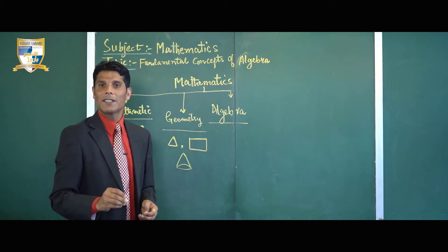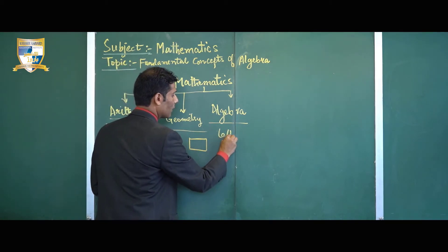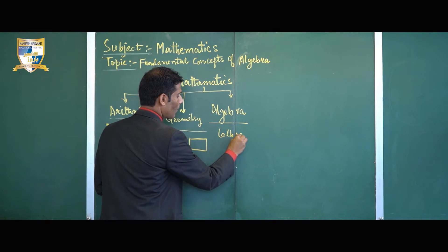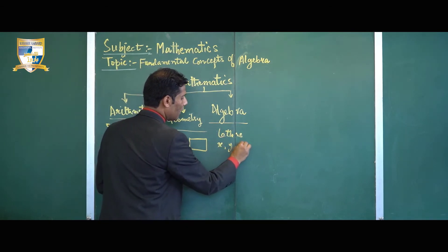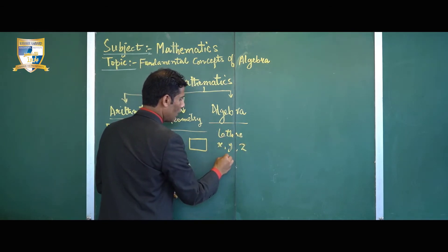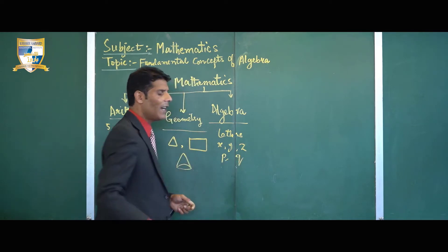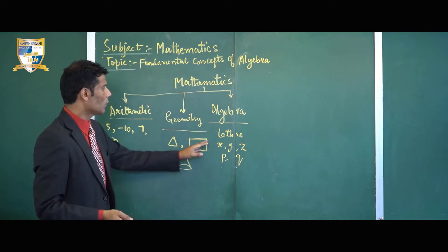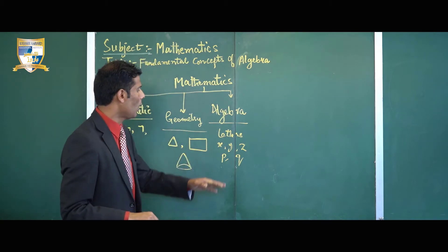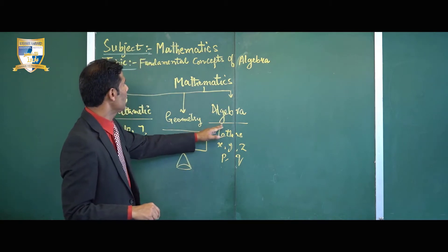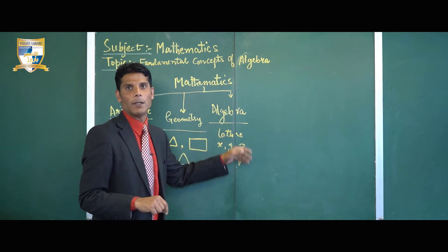Now coming to algebra. Algebra is that branch of mathematics in which we study the properties of letters, for example x, y, z, p, q, and different symbols. Today I am going to tell you about the basic fundamental concepts of algebra.